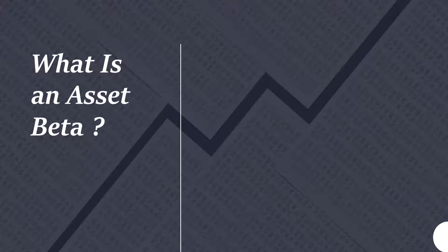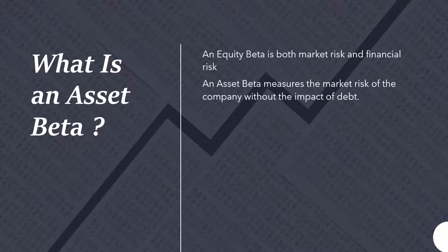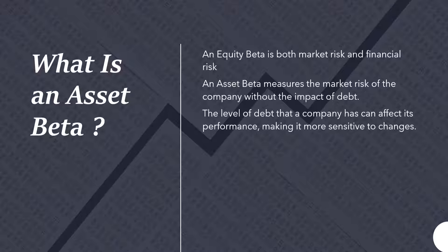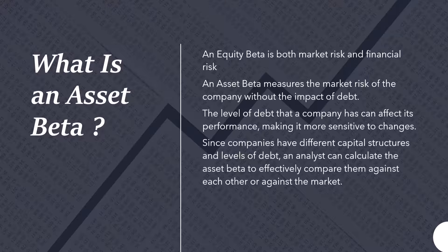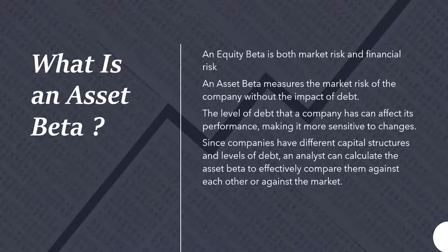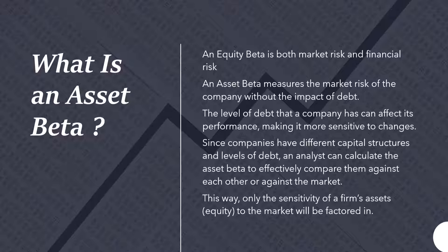So what is an asset beta? An equity beta is both market risk and financial risk. An asset beta measures the market risk of a company without the impact of debt. The level of debt that a company has can affect its performance, making it more sensitive to changes. Since companies have different capital structures and levels of debt, an analyst can calculate the asset beta to effectively compare them against each other or against the market. This way, only the sensitivity of a firm's assets to the market will be factored in, stripping out the financial risk.